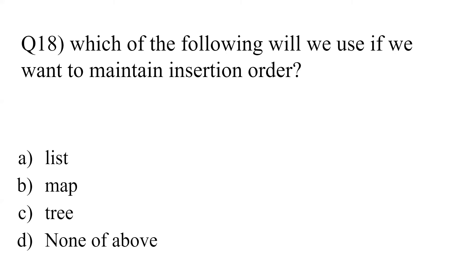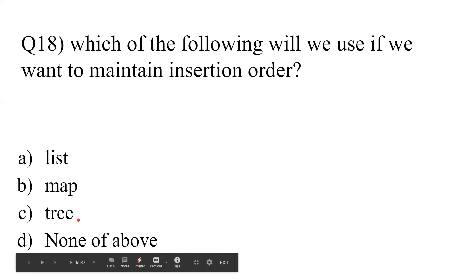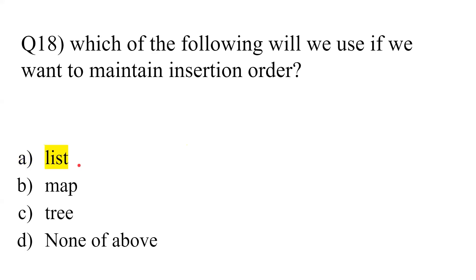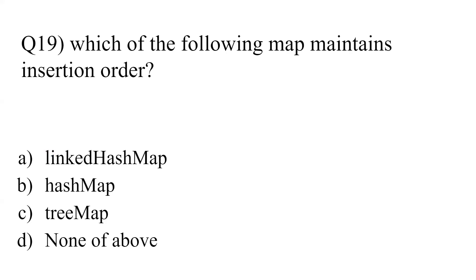Question 18: 'Which of the following will you use if you want to maintain insertion order?' — List, Map, or Tree. Map is for storing things as key-value pairs or dictionaries. Tree is for faster search operations. List is what you use to maintain insertion order. So the answer is List.